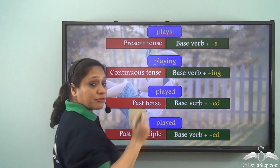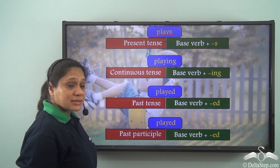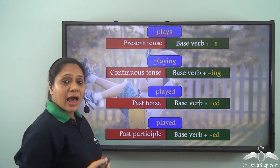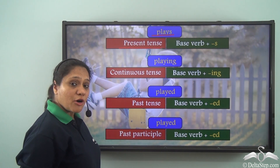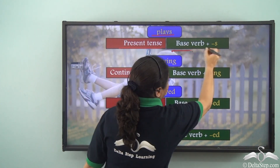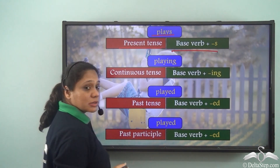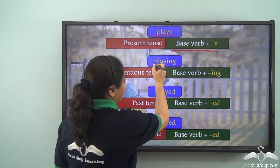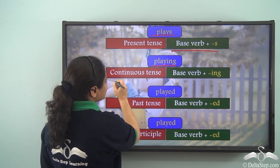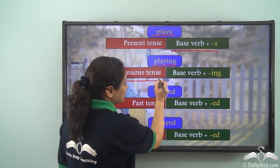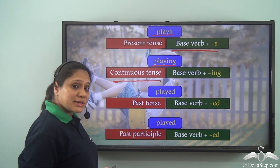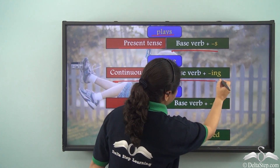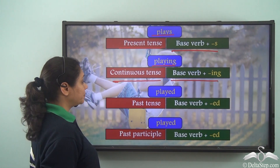The verb 'play' takes different forms. It takes the form 'plays', which is the present tense form, formed by adding an S to the base verb. It takes the form 'playing', which is the continuous tense form, formed by adding '-ing' to the base verb.